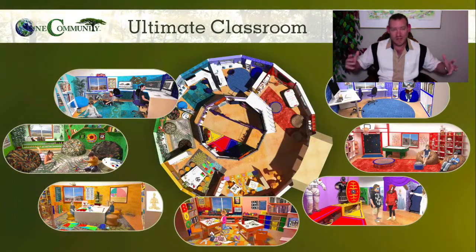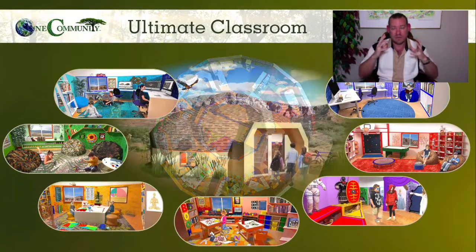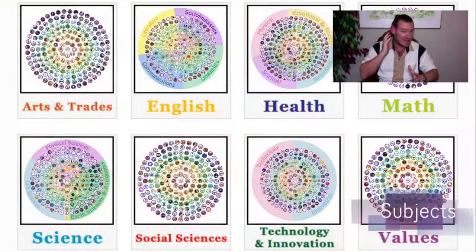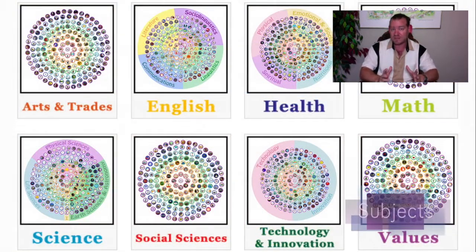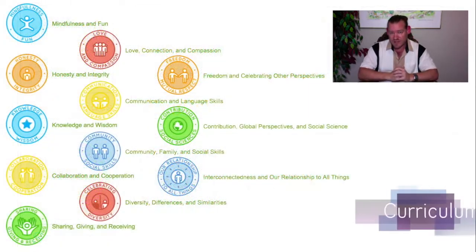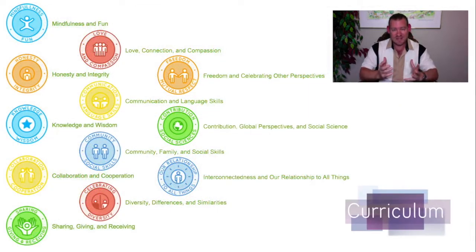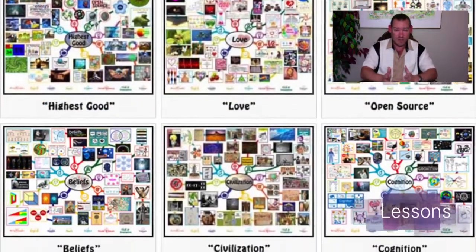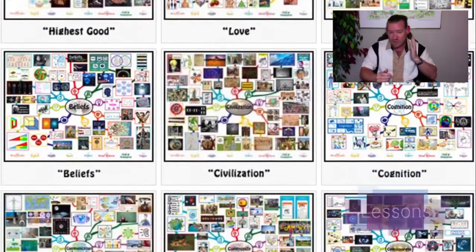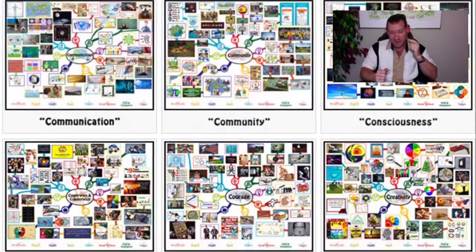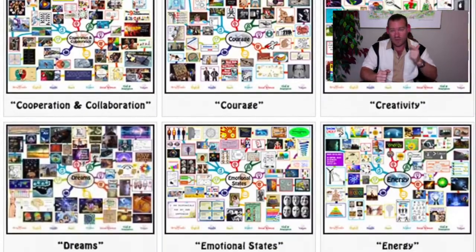Applying permaculture globally, bringing those resources and that knowledge, and feeding it back into a global online network of information so people can access it anywhere in the world — showing what's possible and inviting everybody to participate in whatever way works best for them. Everything we're designing is meant to be implemented as either the complete model or as individual components. If somebody's just growing some new vegetable or fruit, that's a step in the right direction.